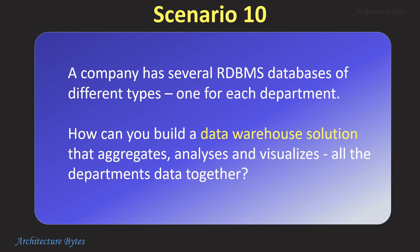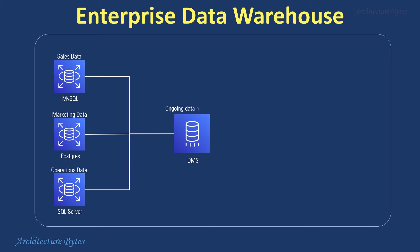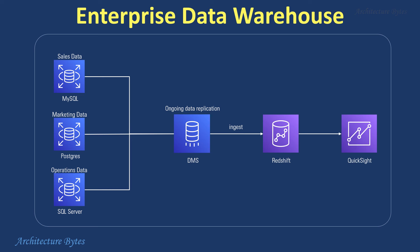A company has several RDBMS databases of different types, one for each department. How can you build a data warehouse solution that aggregates, analyzes, and visualizes all the department's data together? Our data sources are different RDBMS databases, one per department. We will aggregate the data in Redshift. We will use DMS or Database Migration Service to replicate data from the source databases into the target Redshift data warehouse. DMS can do ongoing replication to keep the data up to date within Redshift. Once the data is available in Redshift, it can be queried, analyzed, and visualized using a BI tool like QuickSight.